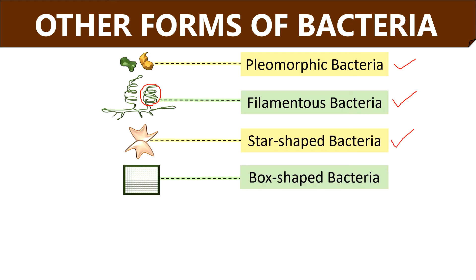Star-shaped bacteria are more or less similar to the shape of a star, and Stella is a type of bacteria having a star shape. Box-shaped bacteria have flat or straight edges and they appear as a thin, flexible sheet with a smooth surface. Small cells appear square shaped and larger ones appear rectangular. These were first isolated from natural salt ponds. Haloarcula valismortis and Haloarcula marismortui are examples of box-shaped bacteria.